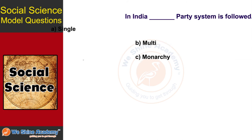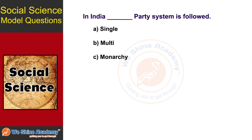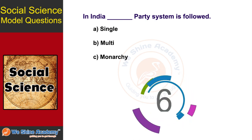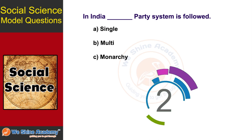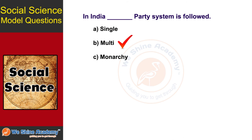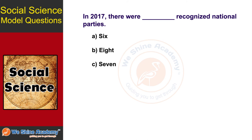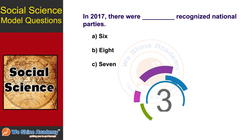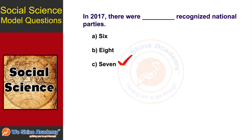The next question is: In India, which party system is followed? India follows a multi-party system. As of 2017, there are 7 recognized national parties. The answer is Option C, 7.